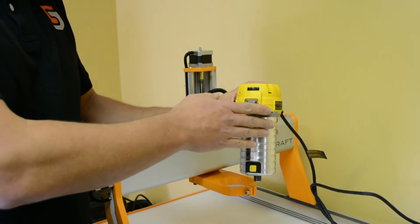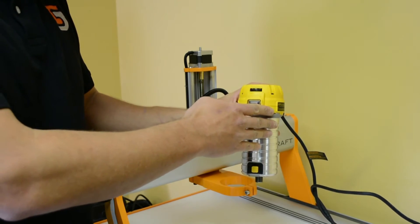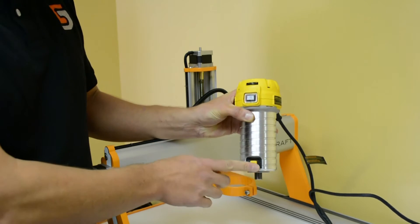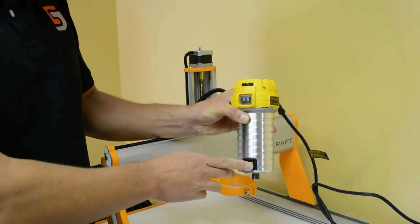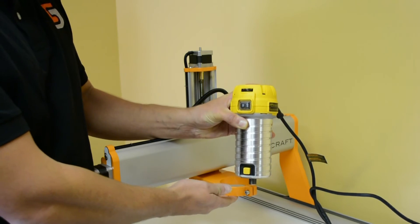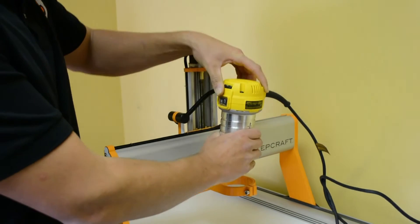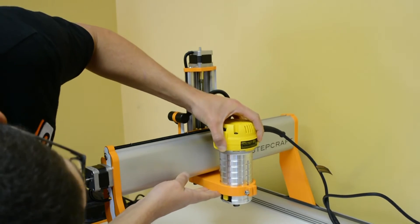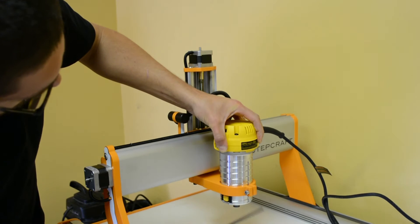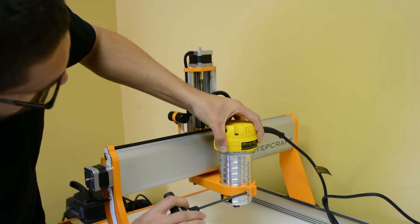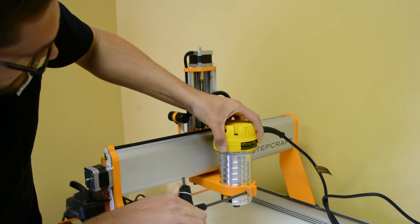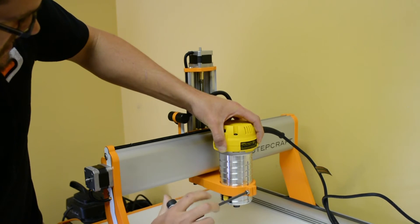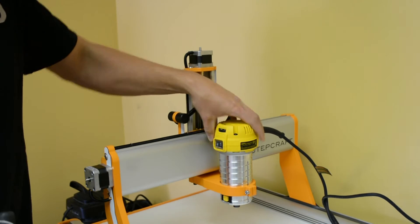Now we're ready to install the Dewalt in the bracket. You want to make sure that you slide it in enough so that this spindle lock button is accessible below the bracket. That looks good, it's accessible. Now I'm going to tighten it down, and it's installed.